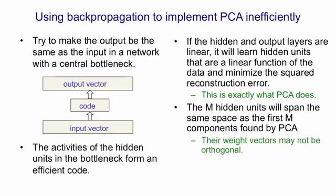So the incoming weight vectors of the code units, which are what represent the directions of the components, may not be orthogonal. And unlike principal components analysis, they will typically have equal variances. But the space spanned by the incoming weight vectors of those code units will be exactly the same as the space spanned by the m principal components.